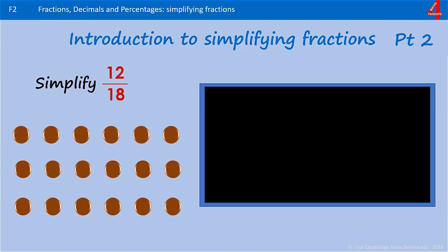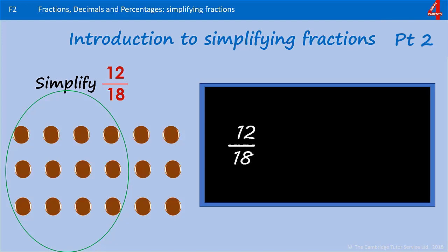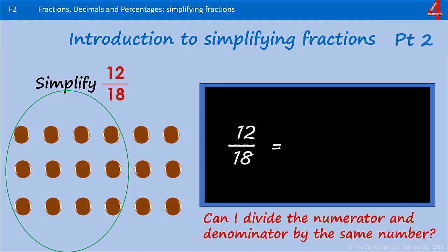We don't always end up with a unit fraction — something that has a 1 as the numerator. Pause the video, have a go at this one. Simplify 12 over 18. I've circled 12 out of 18. What can I divide them both by? I know they're both even numbers, so I'm going to divide them by 2. 18 divided by 2 is 9, and 12 divided by 2 is 6.